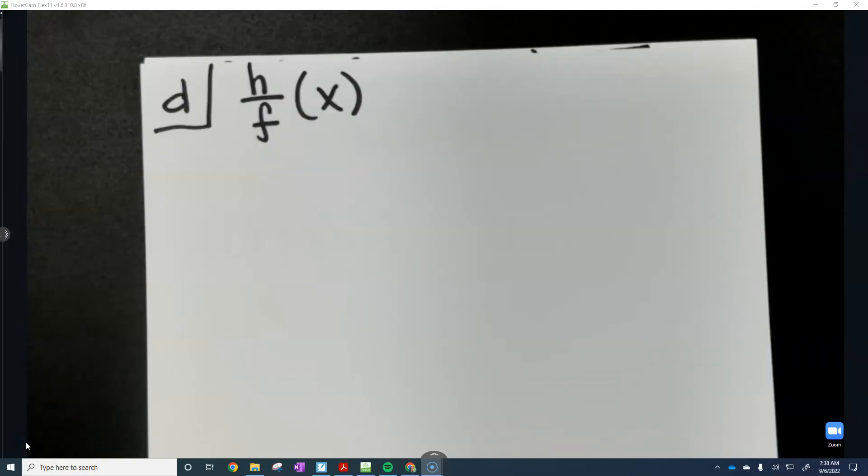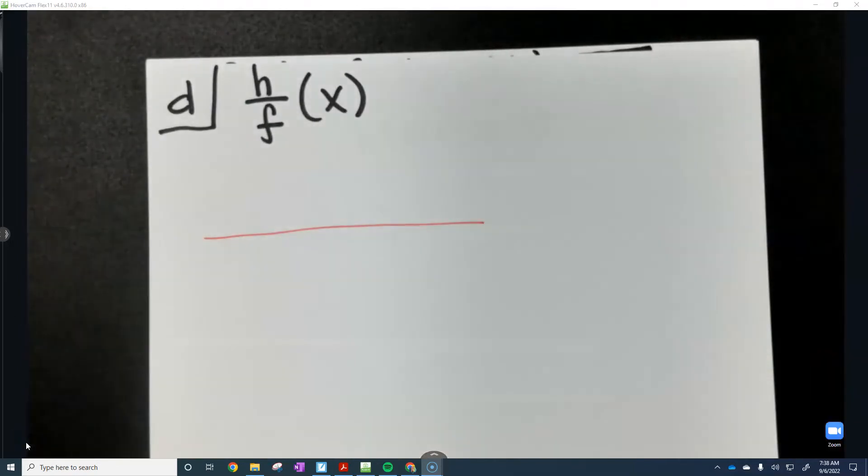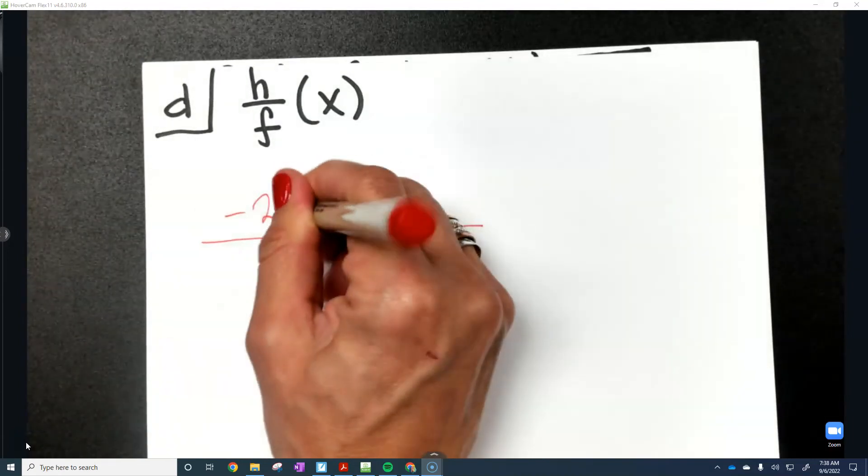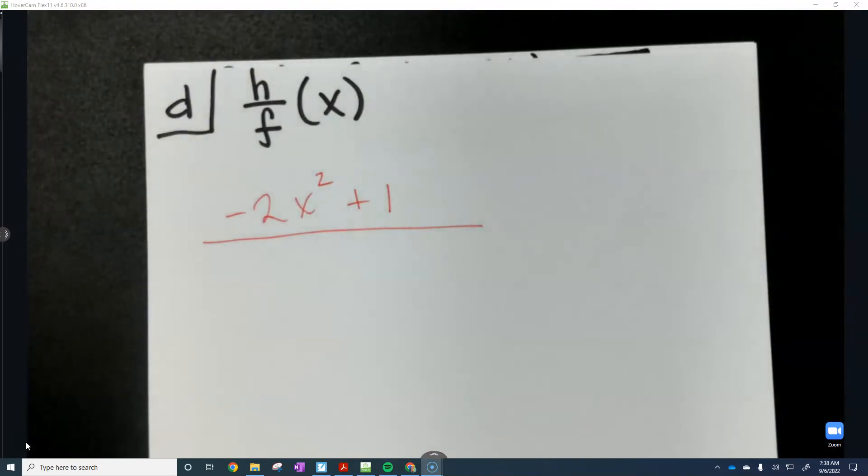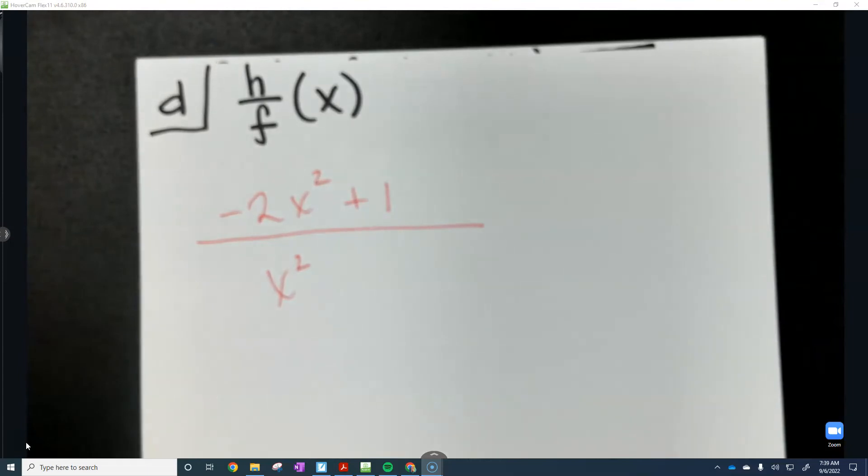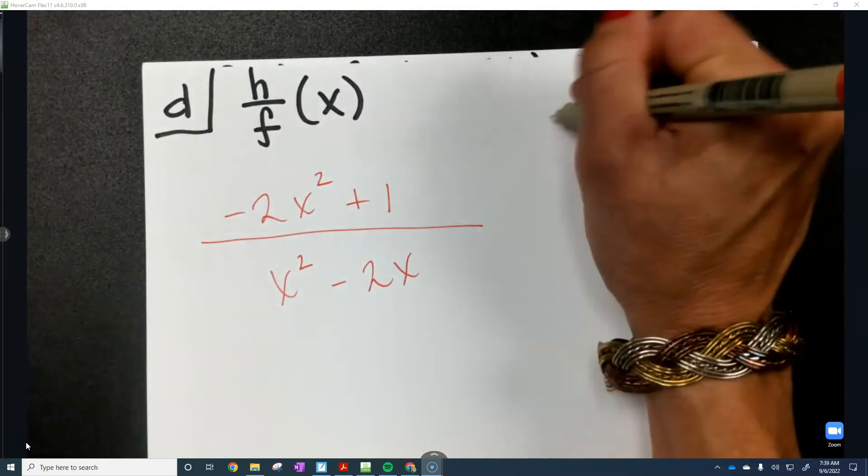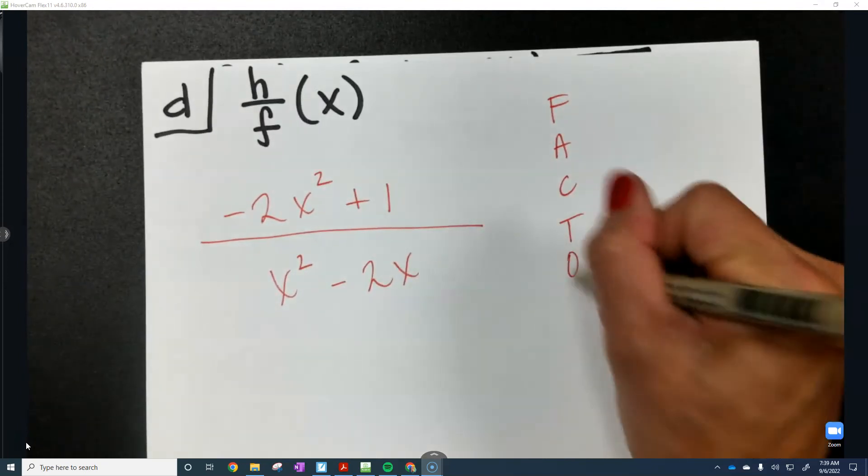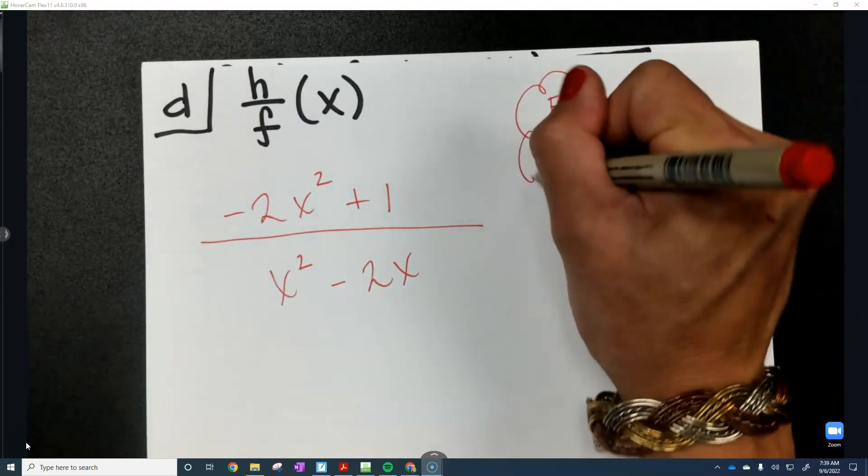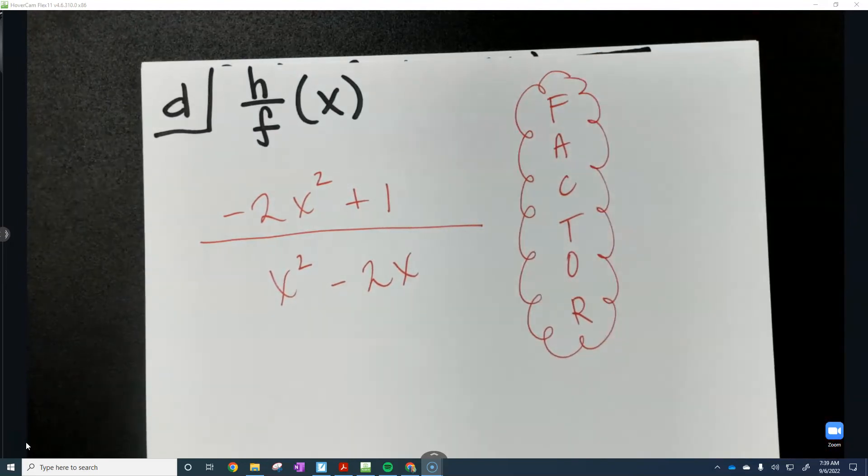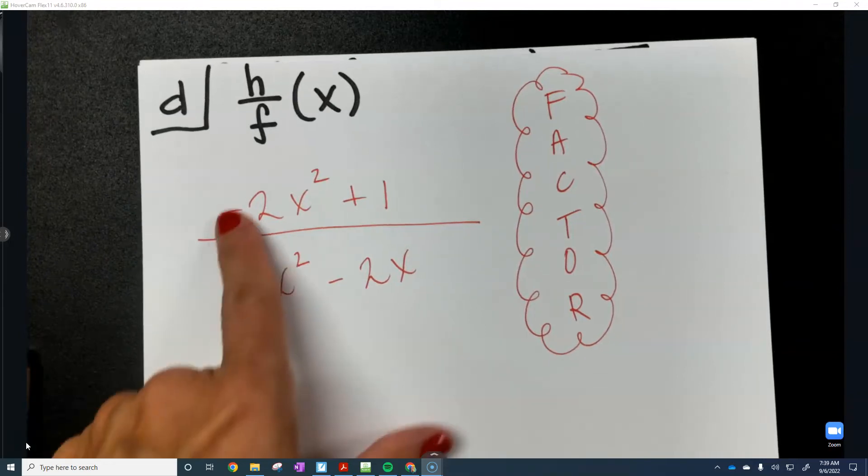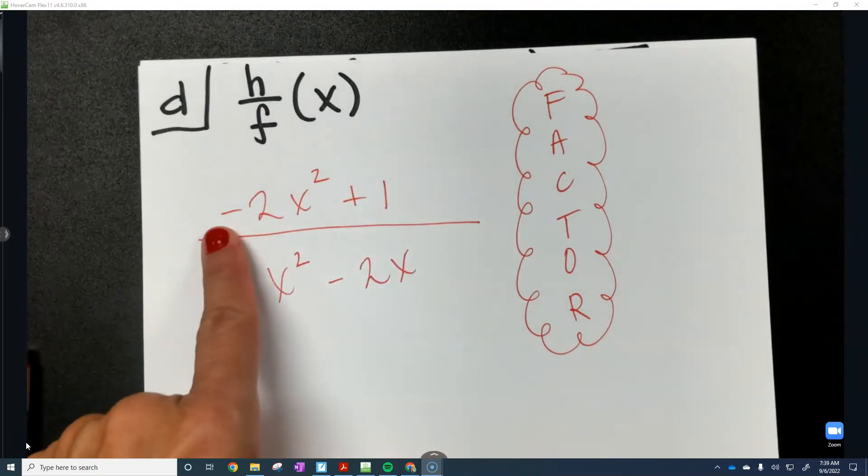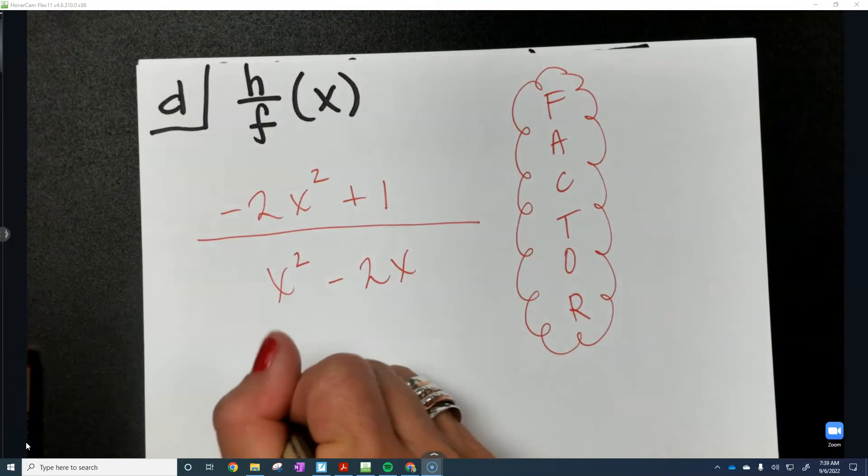We are going to have h divided by f. So I'm just going to draw a fraction bar. I'm going to put my h on top here: negative 2x squared plus 1. And then remember, your f is x squared minus 2x. And this is when you factor because things might cancel out. So remember, if you have a fraction, then you have to check to see if things can cancel out. So if you notice, I cannot take anything out of the top. I could take out a leading negative, but I cannot take out an x. So I'm going to rewrite the top.